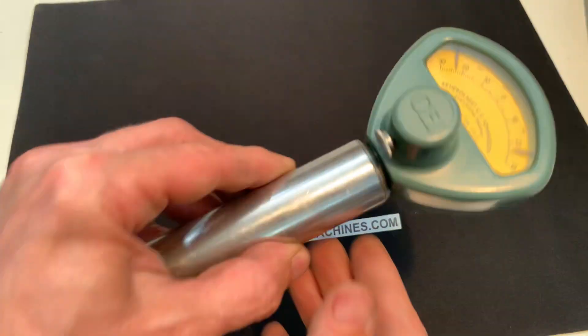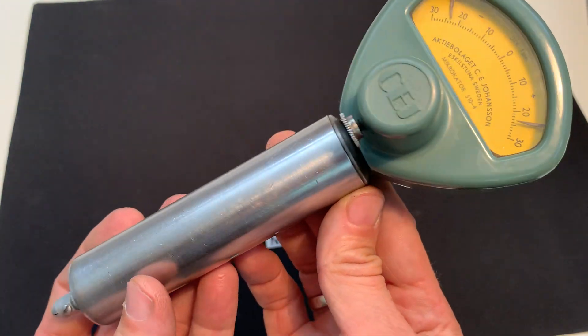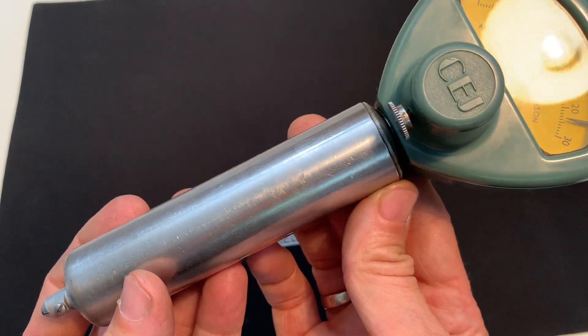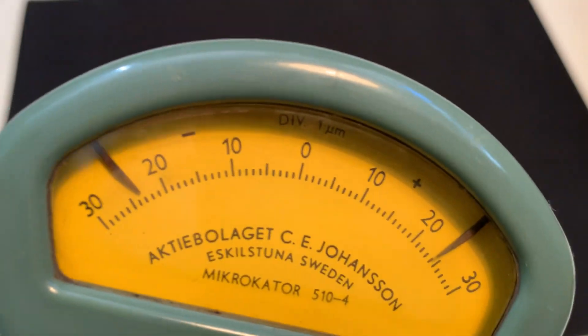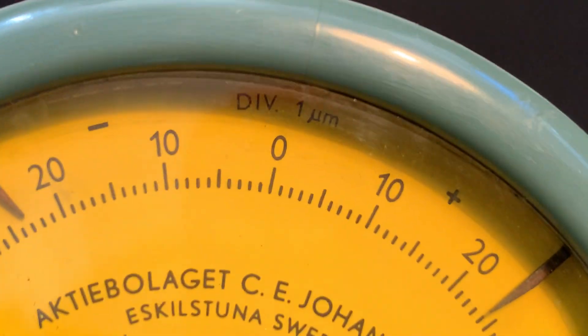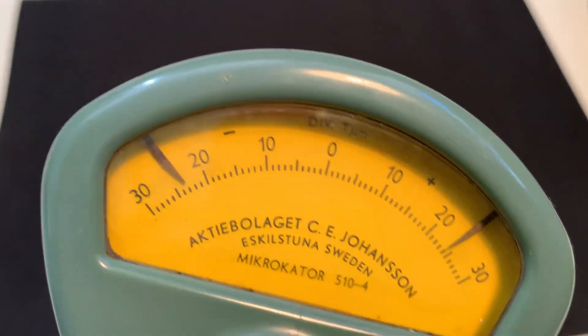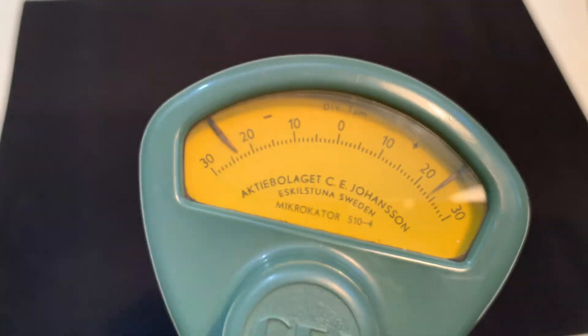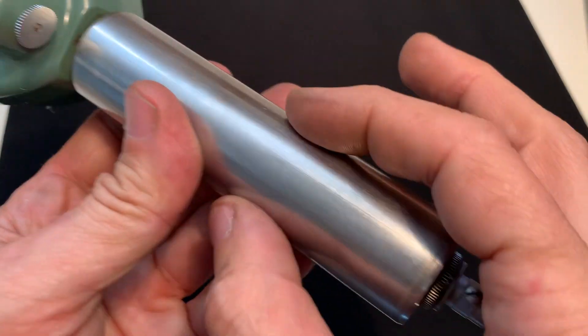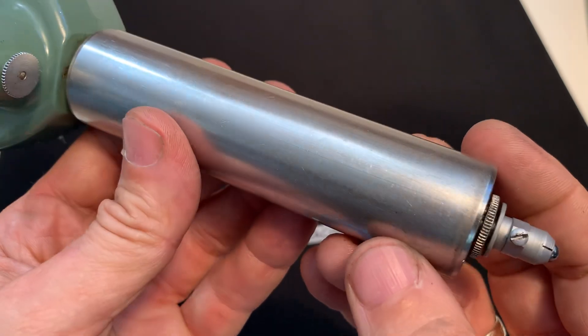Hello, here is the Johansson microcater. It's a comparator with a division of one micrometer. The tube here has a diameter of 30 millimeters.